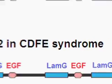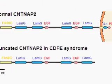Patients with cortical dysplasia focal epilepsy syndrome have intractable epilepsy, after which begins hyperactivity, loss of language, impulsivity, and 70% of the patients have an autism spectrum disorder.